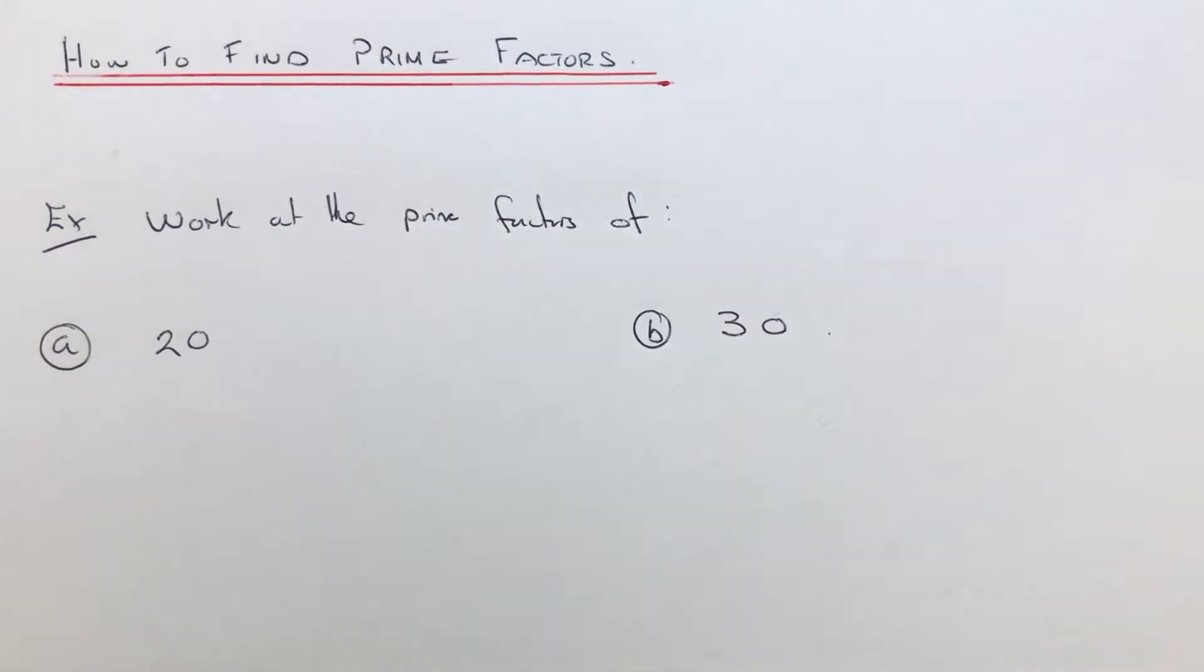Hi guys, welcome back. This is Maths 3000. Today I'm going to show you how to find all the prime factors of a number. The easiest way to do this is first of all write down all the factors of the number and then pick out the factors which are prime.